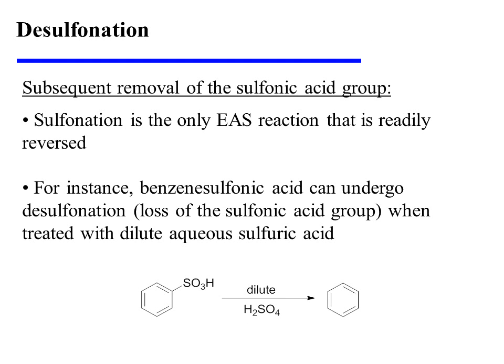It's also important to note that sulfonation is the only EAS reaction that is readily reversed. For instance, benzene sulfonic acid can undergo desulfonation, or the loss of the sulfonic acid group, when treated with dilute aqueous sulfuric acid.